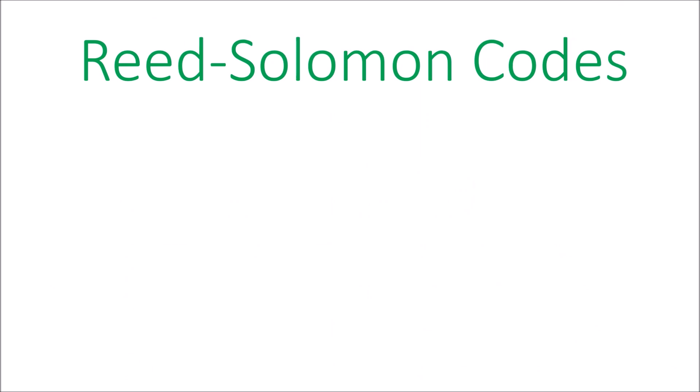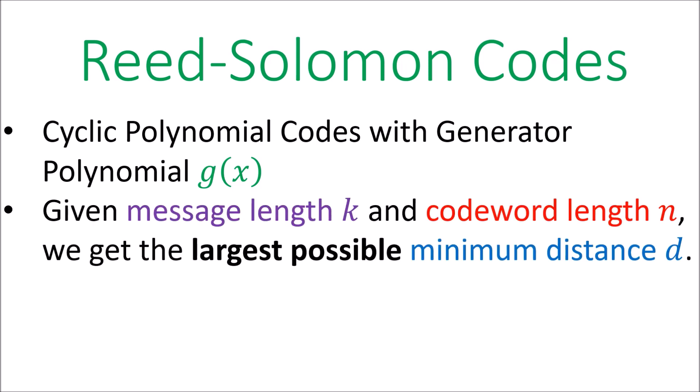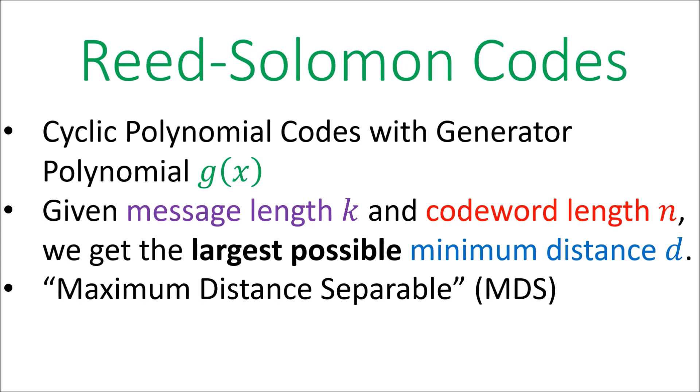Now we're going to learn about Reed-Solomon codes. Reed-Solomon codes are cyclic polynomial codes that use a generator polynomial g of x just like we've seen before. The thing that's special about Reed-Solomon codes is that, given a message of length k and a codeword length n, Reed-Solomon codes correct the maximum number of errors that's theoretically possible by providing the largest theoretically possible minimum distance d between the codewords. Because of this, we say that Reed-Solomon codes are maximum distance separable, or MDS, a property that I'll talk about later.